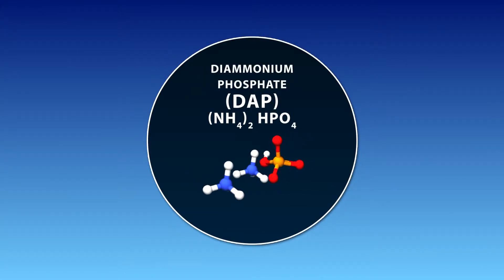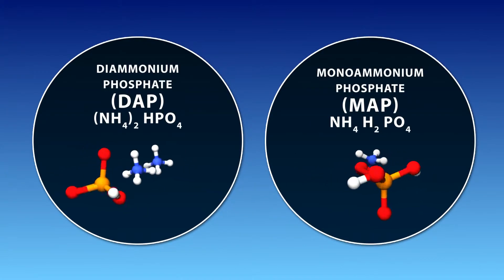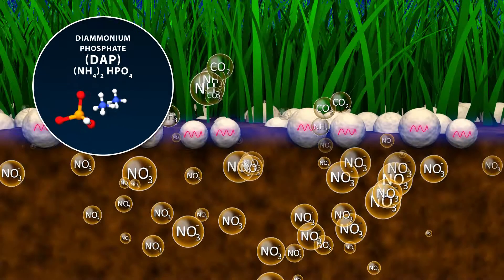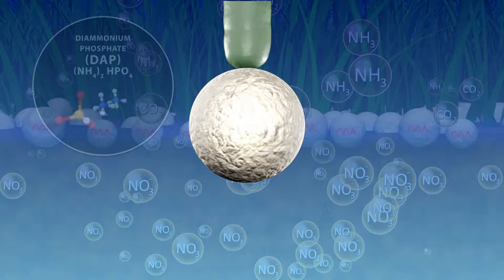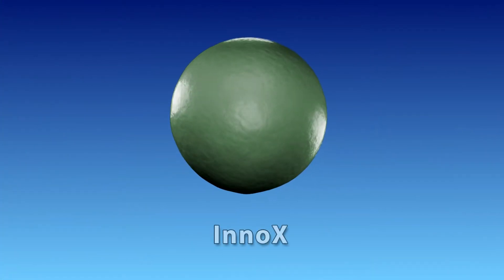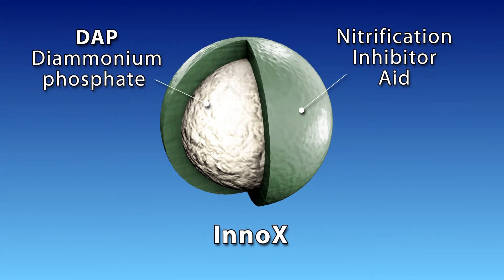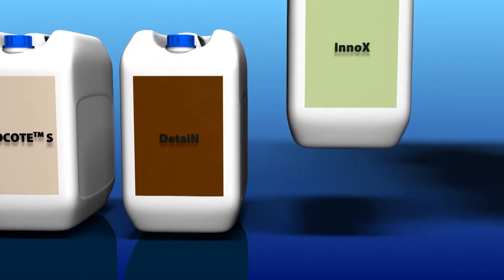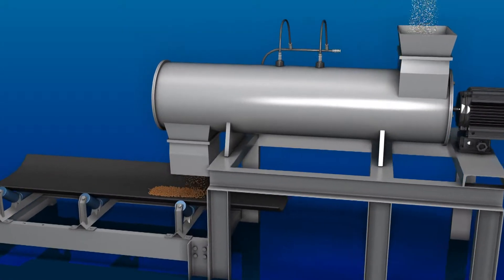Di-ammonium phosphate, DAP, may be a more cost-effective source of nitrogen and phosphate than mono-ammonium phosphate, MAP, used in bulk blend fertilizers. However, DAP is more prone to nitrification than MAP. Kimli's nitrification inhibitor aid, ENOX, cost-effectively combats the deleterious effects of nitrification. Kimli provides all inhibitor aids in liquid form that can then be applied at the bulk blender's coating facility.